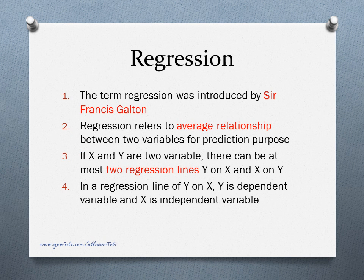Now some questions from regression. The term regression was introduced by Sir Francis Galton. Regression refers to the average relationship between two variables for prediction purposes. If X and Y are two variables, there can be at most two regression lines: Y on X, and X on Y. In a regression line of Y on X, Y is the dependent variable and X is the independent variable. Dependent variable is otherwise known as explained variable or regressed variable, and independent variable is otherwise known as explanatory variable or regressor.